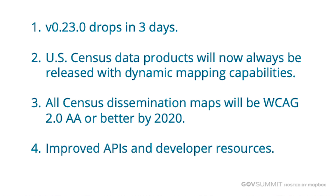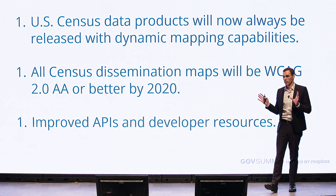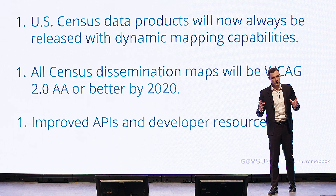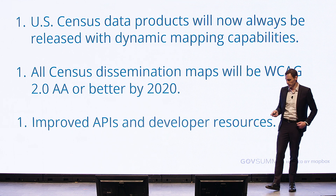We will have a fully accessible map — WCAG 2.0 AA — by 2020. This is a key milestone and mission of ours. We need to make sure our map can be easily accessed by anybody. And lastly, an improved API and developer resources section. We are going to open source this entire platform and allow folks to pick up that code and customize it to their wishes, because we can only solve for the basic core ideas, but we think that if we can put these services in your hands today, you'll do a lot more with them.